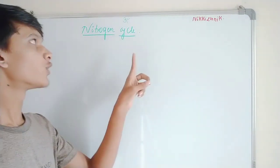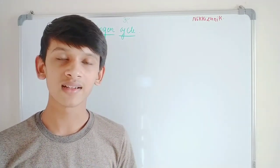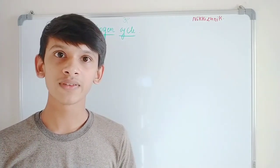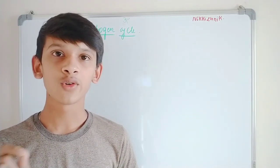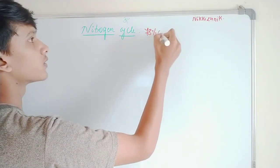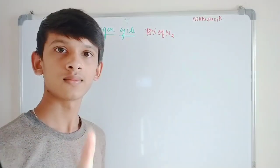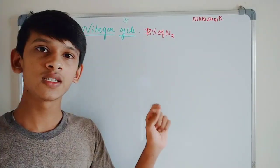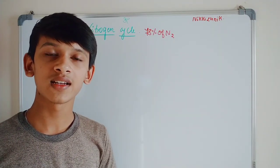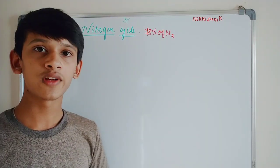First of all, let's talk about Nitrogen. The atmosphere has 78% Nitrogen in the form of N2, and 21% Oxygen. There are other gases like Carbon Dioxide and Noble Gases. So 78% of atmospheric Nitrogen is N2.